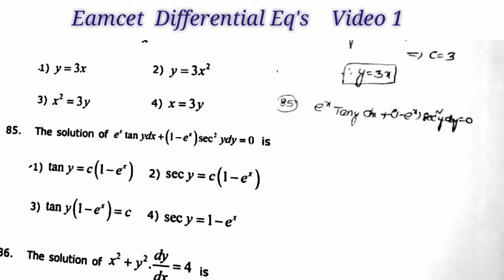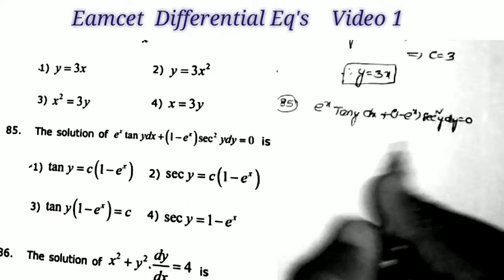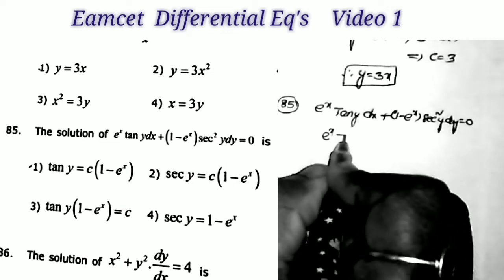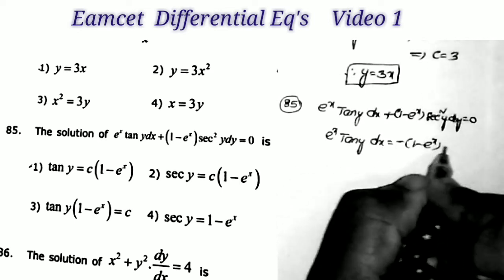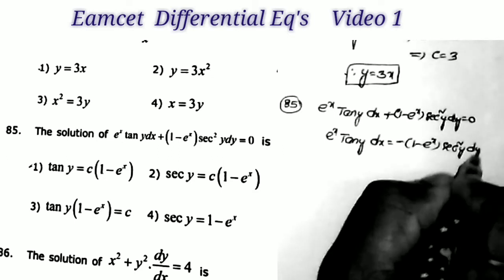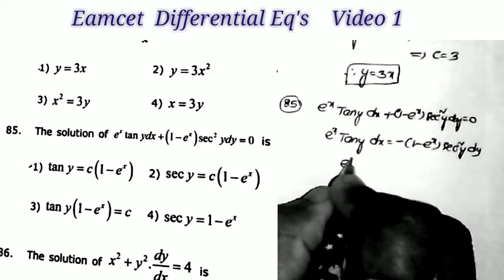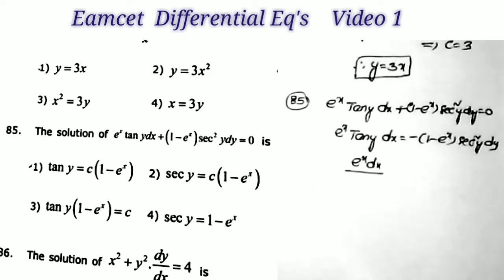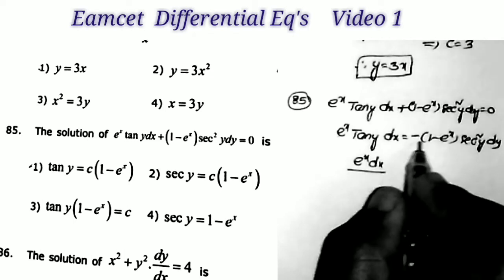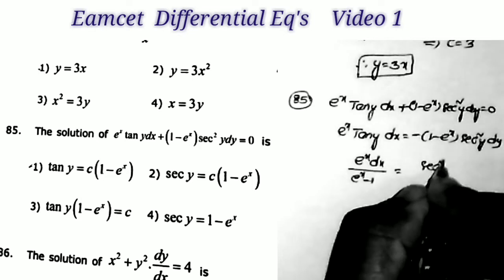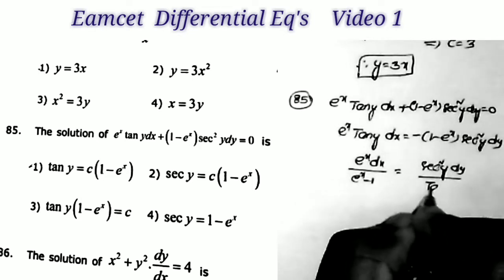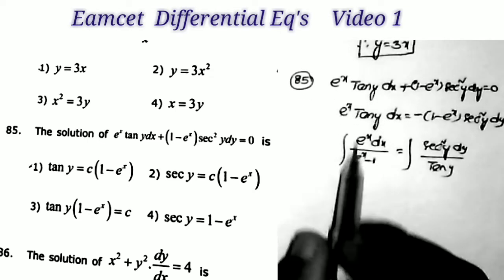Next question, sum number 85: the solution of e^x·tan(y)dx + (1−e^x)sec²(y)dy = 0. Very easy. We write e^x·tan(y)dx = −(1−e^x)sec²(y)dy. Now separating variables with same terms on one side: e^x dx/(e^x−1) = sec²(y)dy/tan(y). Now taking the integration.